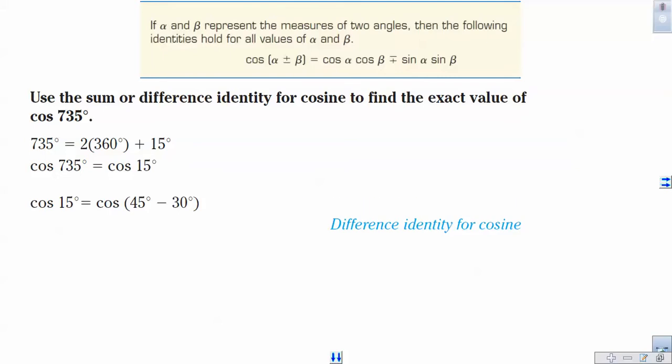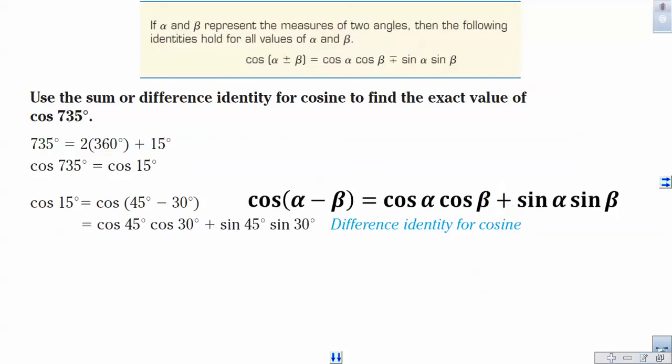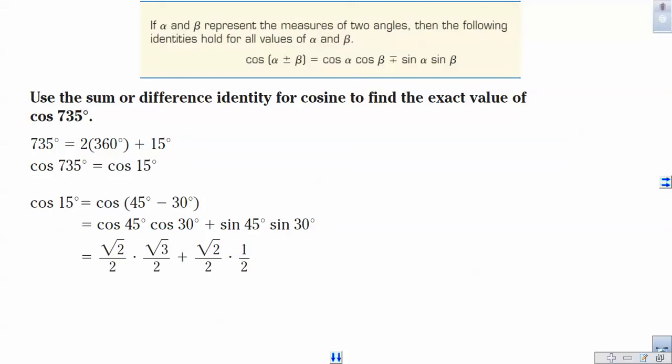Now, reminder, we're going to be using a difference identity for cosine. So looking at that difference identity, because it's minus here, we need to use a plus sign here. So we want the one that's being added here. So cosine, cosine, plus sine, sine. Turn it over to our unit circle. Square root 2 over 2 times square root 3 over 2 plus square root 2 over 2 times 1 half.